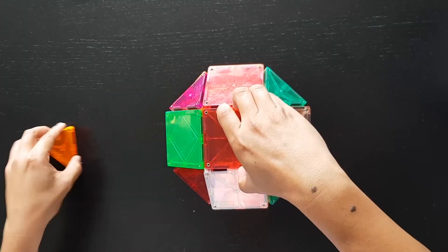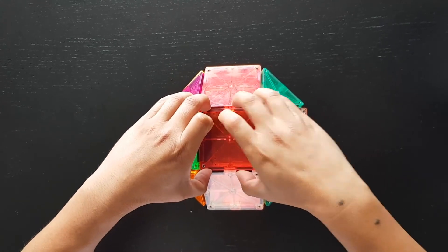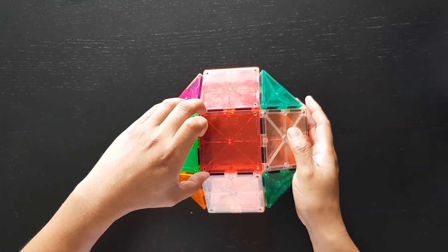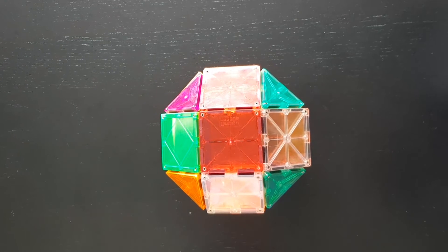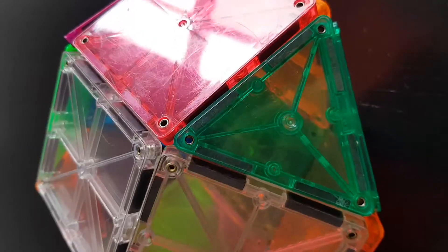And finally we just need to complete it and make sure that everything lines up correctly. Make sure that the frame is holding together. And there you have it guys, this is an octadecahedron. We love to do this challenge with the children.